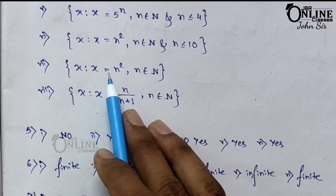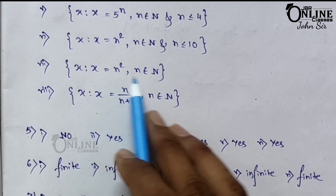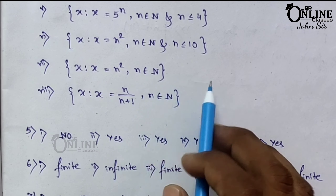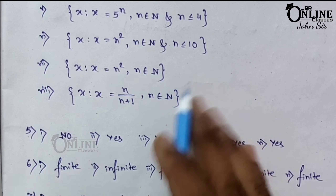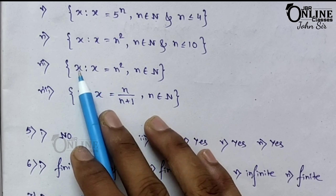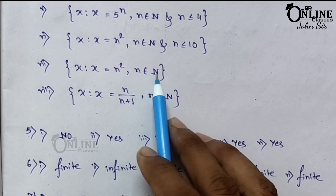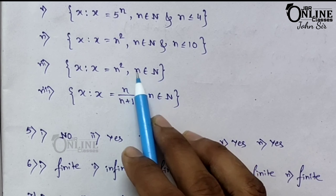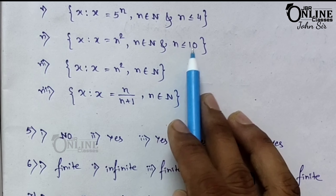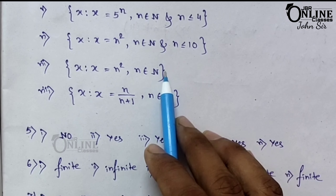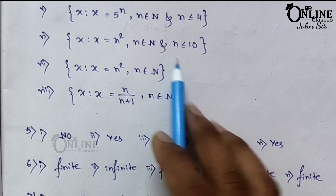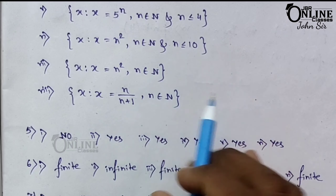Number 7: {1, 4, 9, 16, 25, ...}. This has dots at the end, meaning there is no last number. So write as: {x | x = n squared, n belongs to N}. Unlike the previous one with 100 as the last number, here there is no boundary.